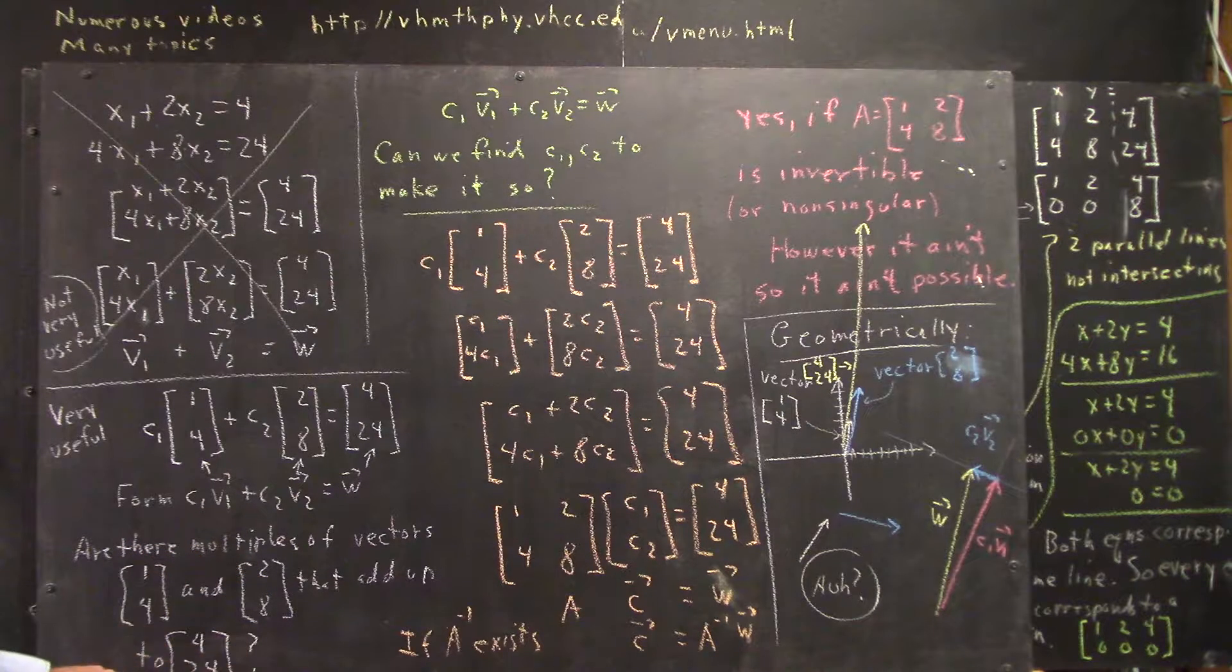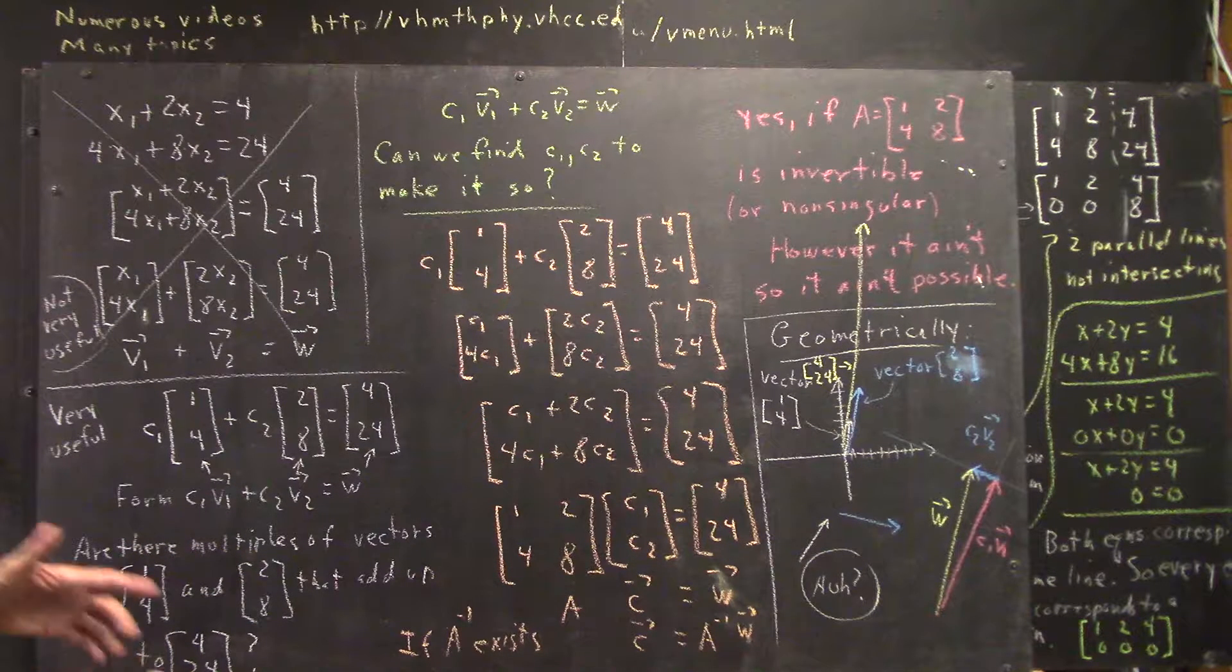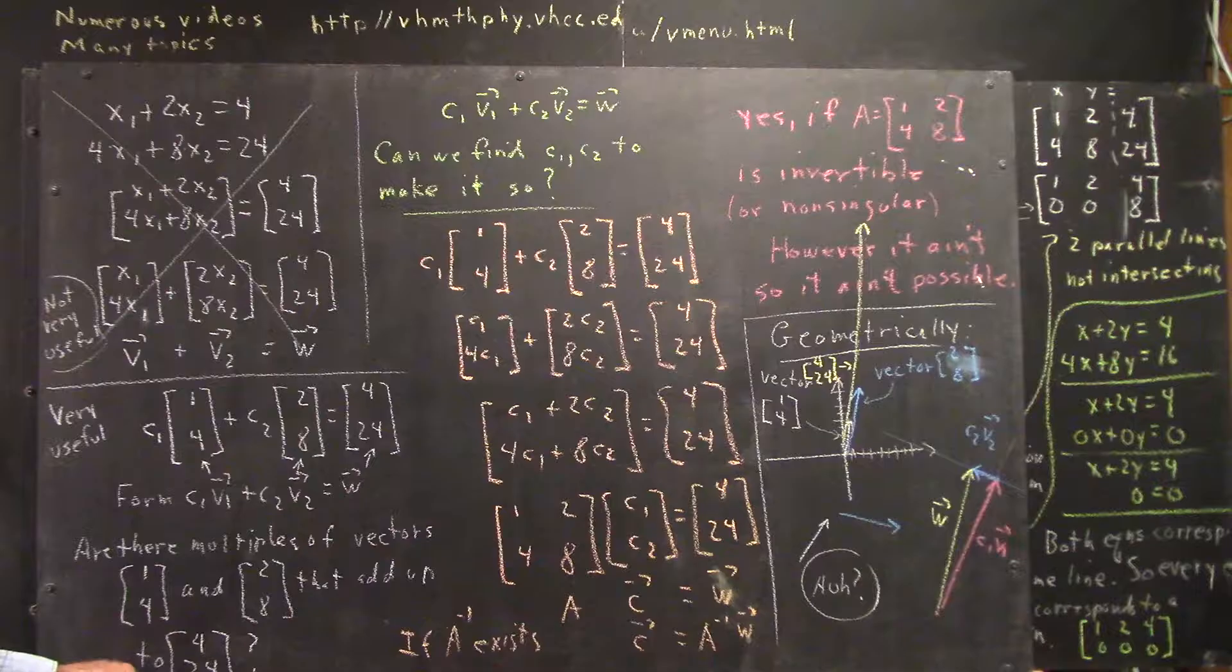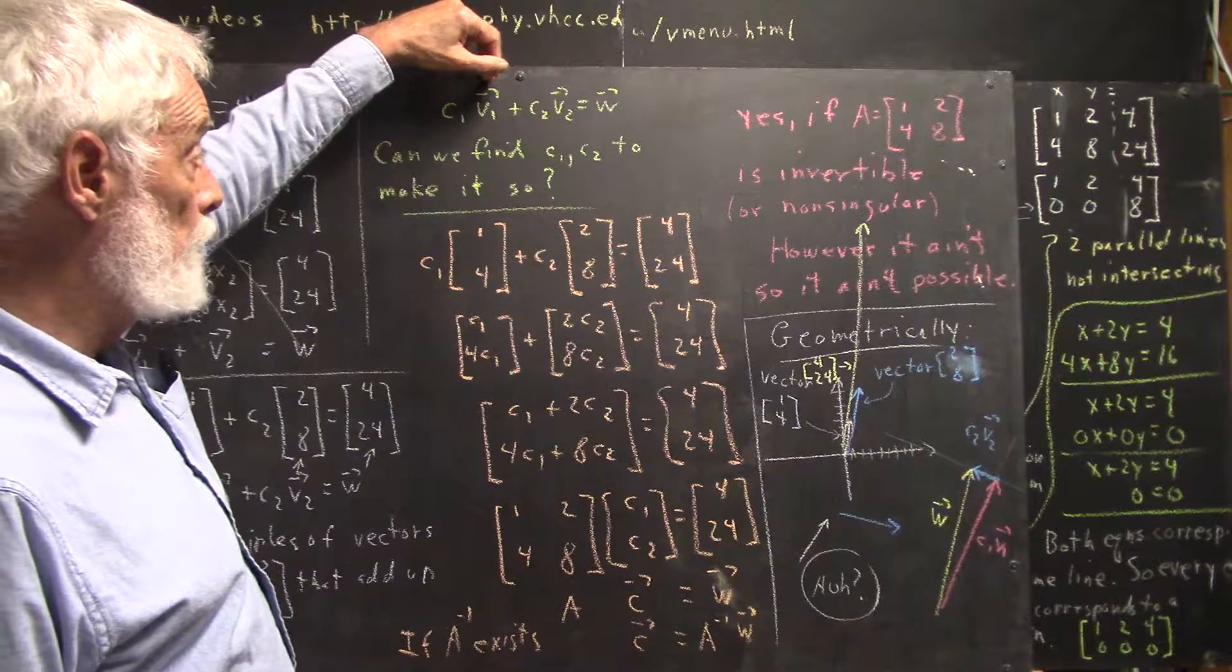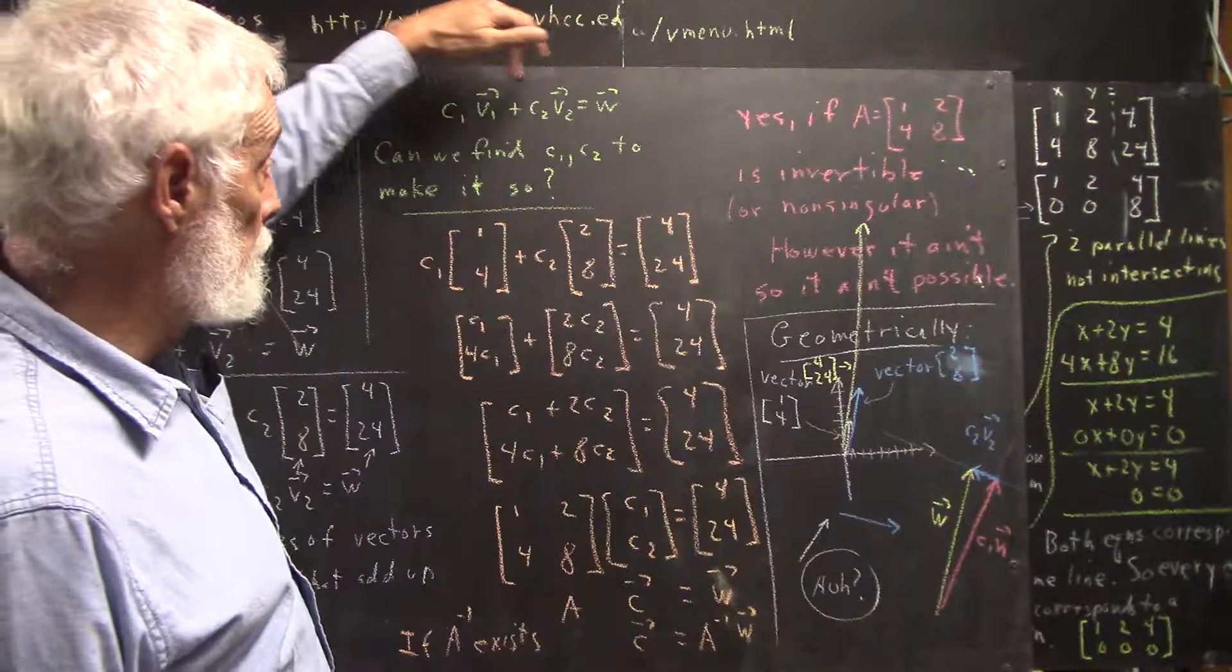Can we find numbers to multiply by this one and this one so that we get this one? Can these vectors be combined in some way to give us this vector?